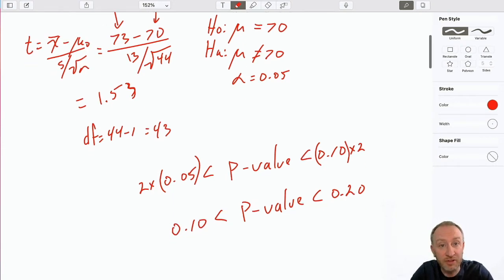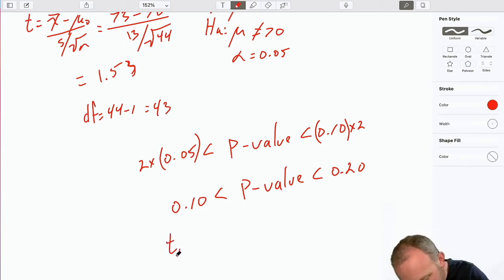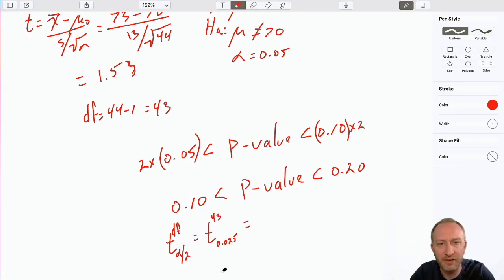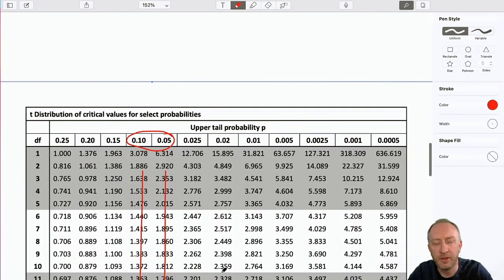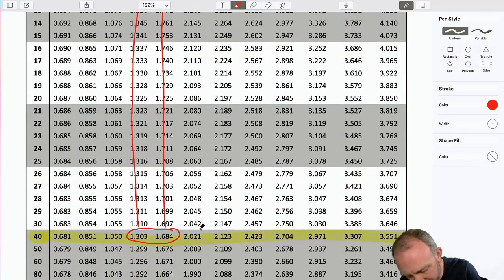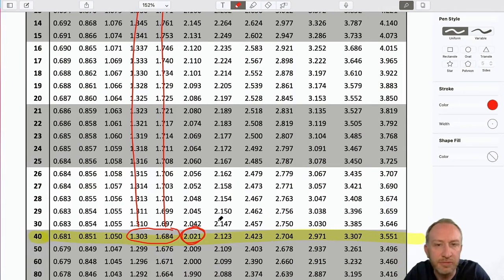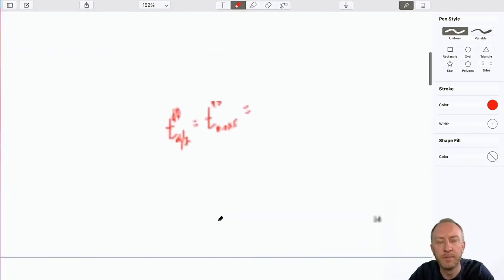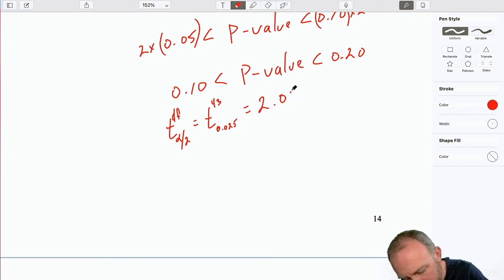Similarly, if we're using the critical value approach, that's going to be alpha divided by 2 with so many degrees of freedom. So here, this is at alpha 0.05, so I would need alpha 0.025. And here we have 43 degrees of freedom, although we're rounding it to 40. There's my alpha divided by 2, and then I'm coming down. There's my critical value, 2.021.